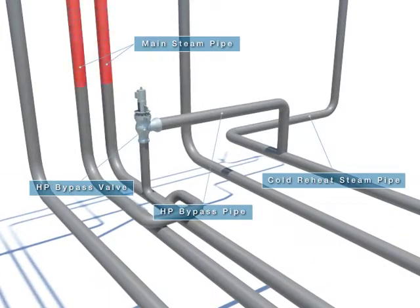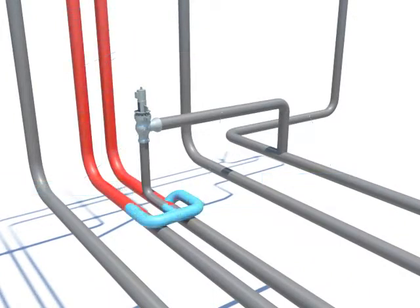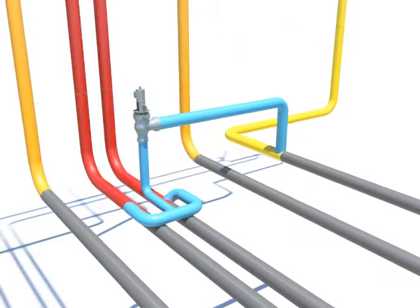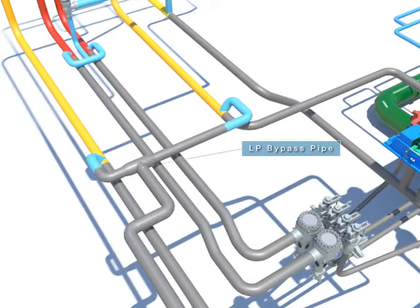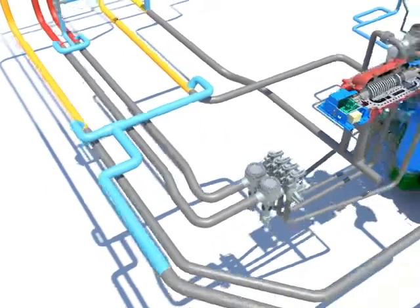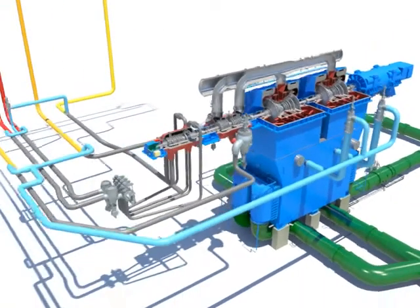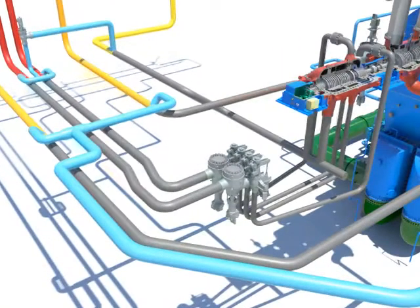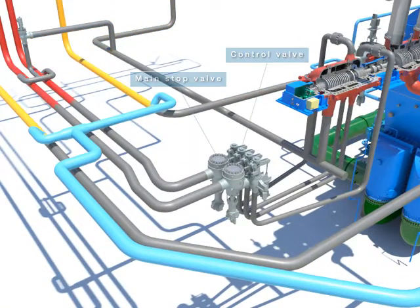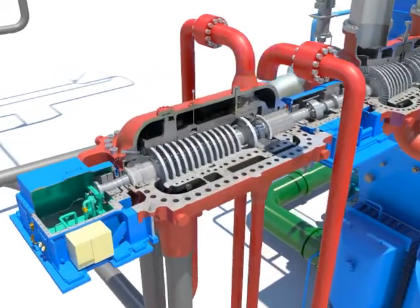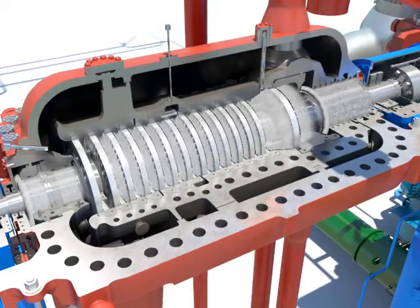Steam made from the boiler bypasses to the condenser until it becomes high quality steam. High quality, high pressure, overheat steam goes into the reheater after going through the main stop valve and control valve, into the HP turbine, and through 14 HP stages at the end of the turbine.